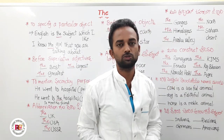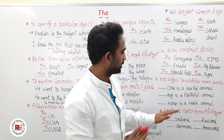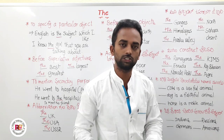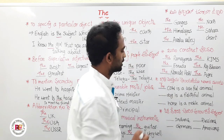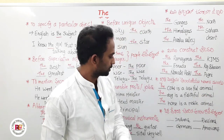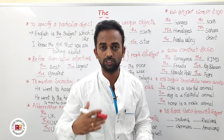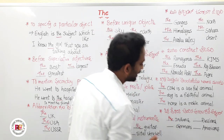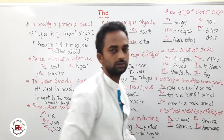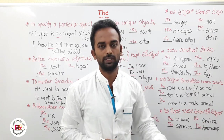The next most important point: we use 'the' to represent a whole class or species. For example: 'The cow is a useful animal,' 'The dog is a faithful animal,' 'The horse is a noble animal.' Also, we use 'the' before nationalities — for example: the Indians, the Russians, the Germans, the Americans. When a nationality word refers to the people of a country, we use 'the'.